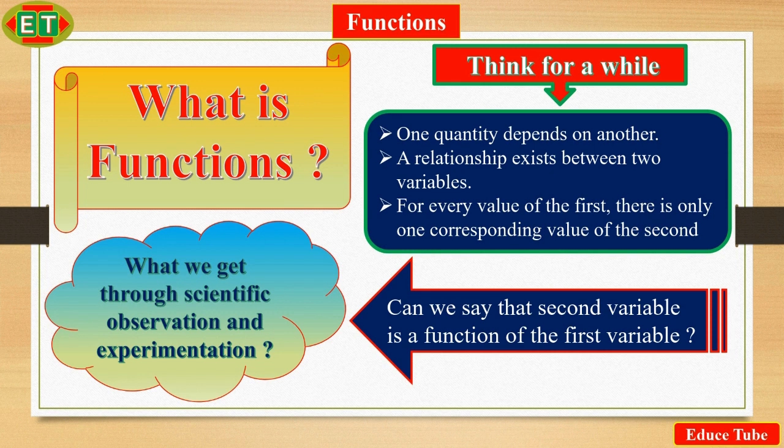What we get through scientific observations and experimentations? Does those outcomes give us a clear understanding that there are situations where the value of one variable is somehow linked to the value of another variable?